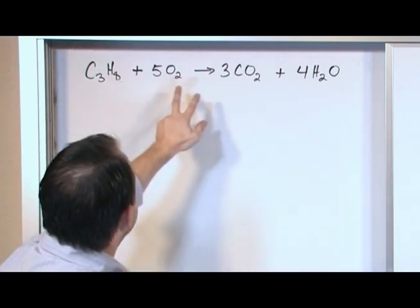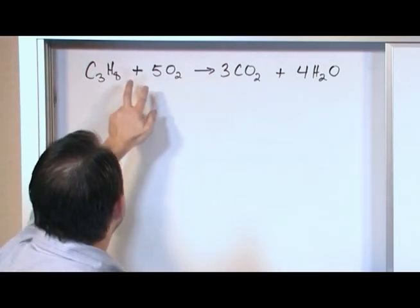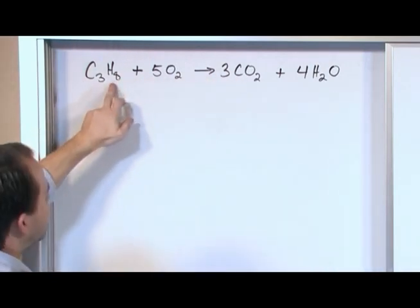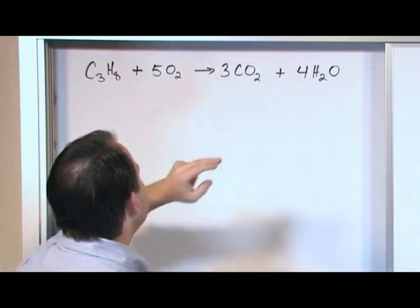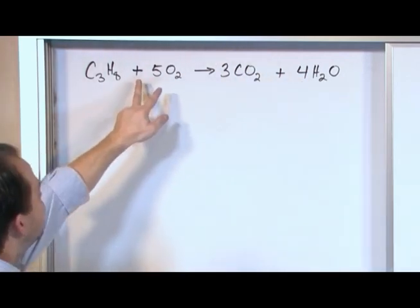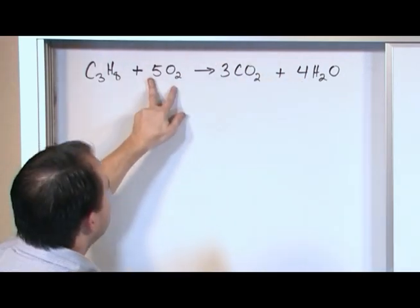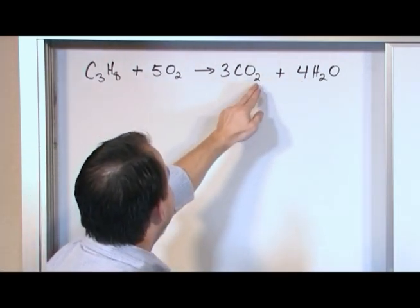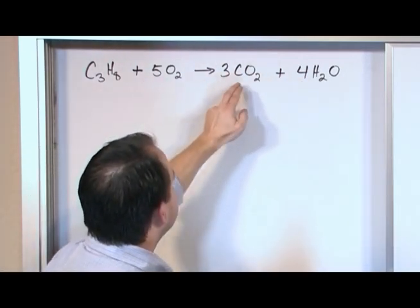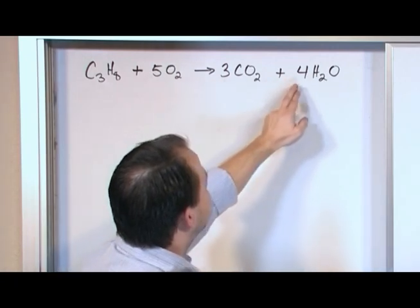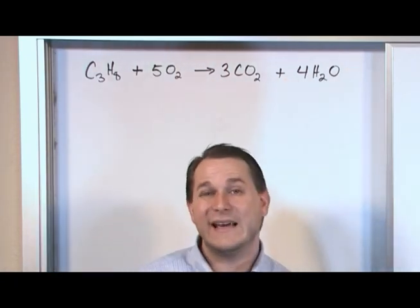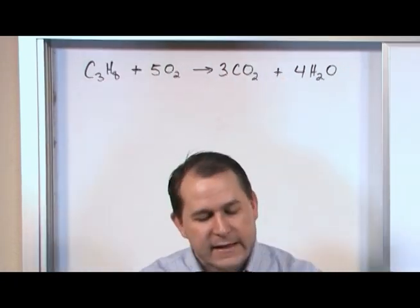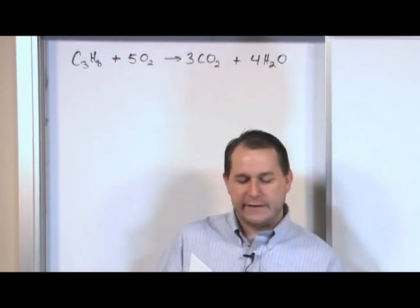3 carbons on the left, 3 carbons on the right. 8 hydrogens on the left, 2 times 4 is 8 hydrogens on the right. 10 oxygens on the left, and here you have 6 oxygens — 2 times 3 is 6 — plus another 4 gives you 10 oxygens. So this equation is balanced.